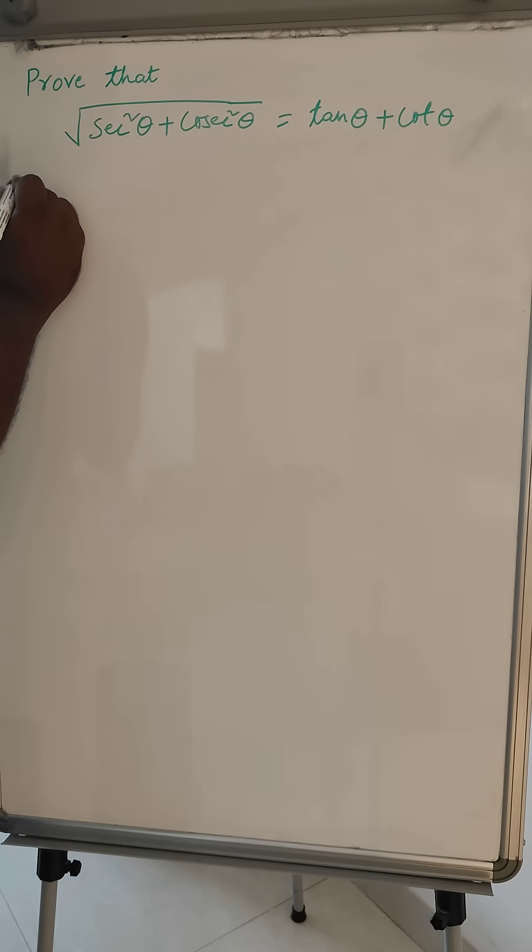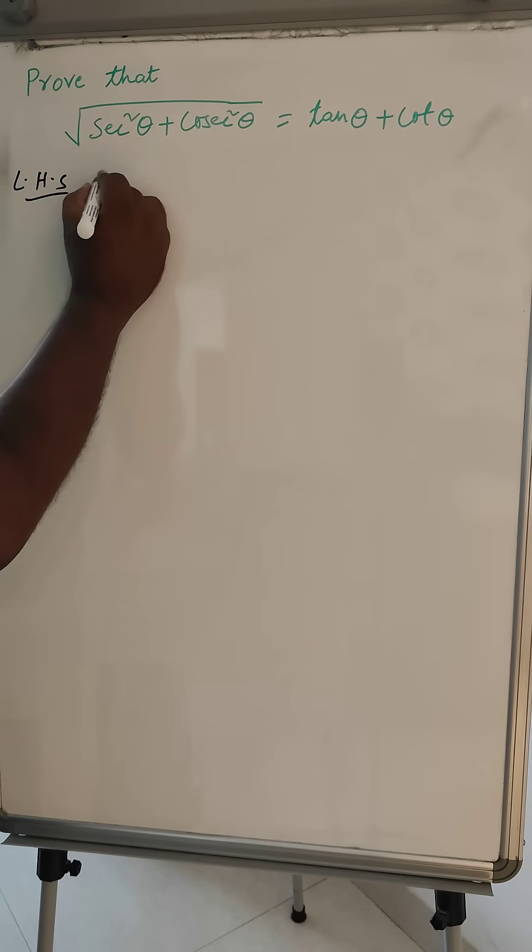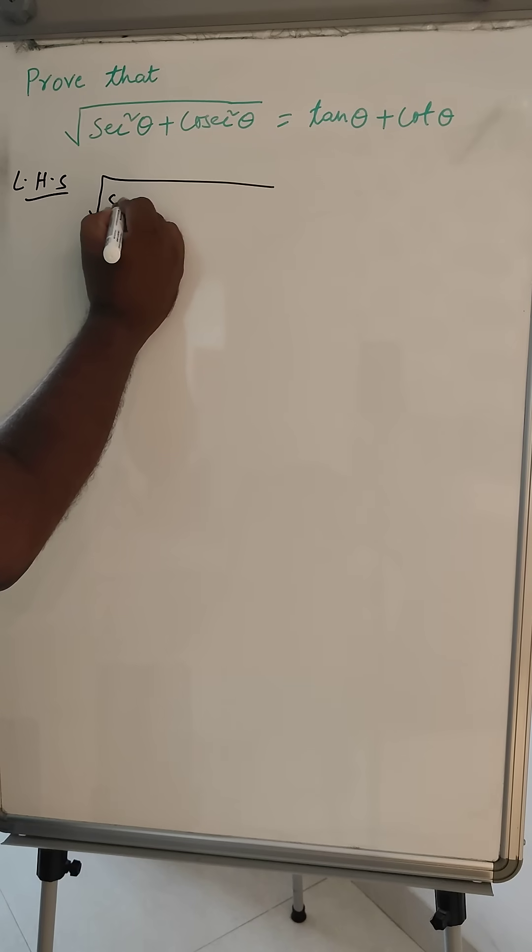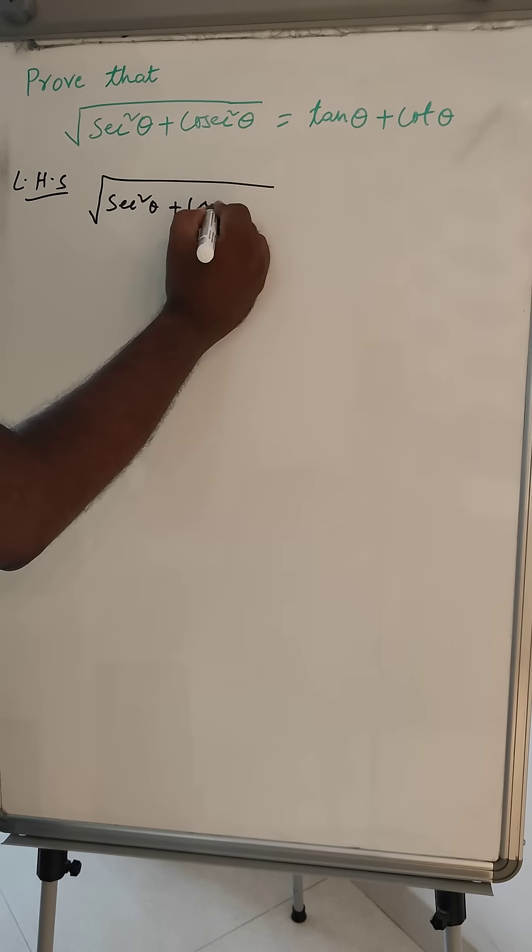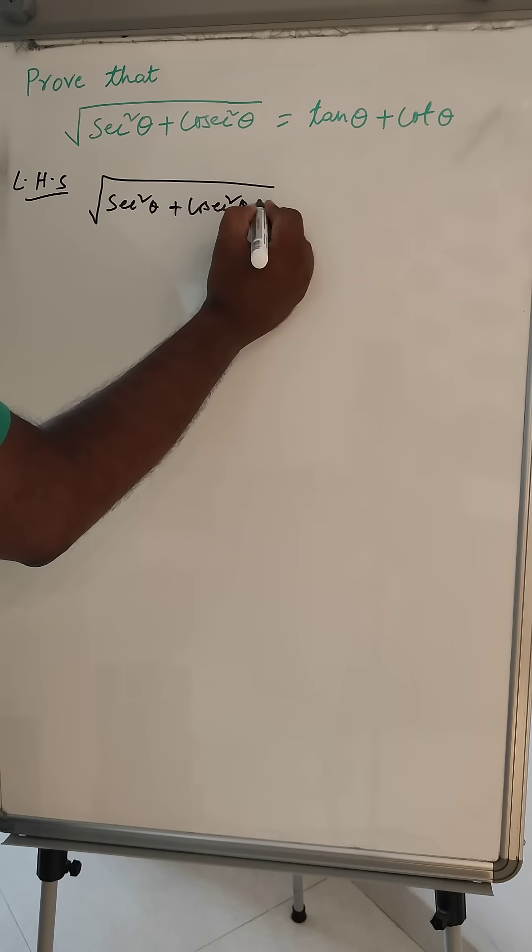So let's just start doing this. We will take from LHS first. So here, sec square theta plus cosec square theta.